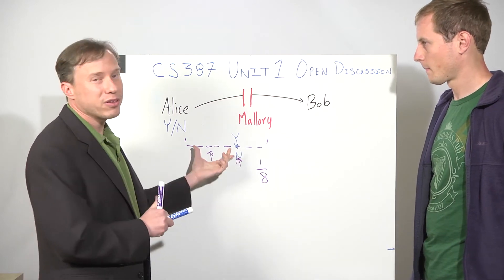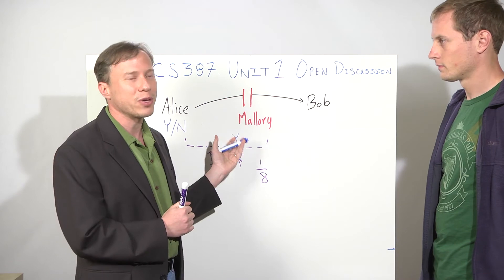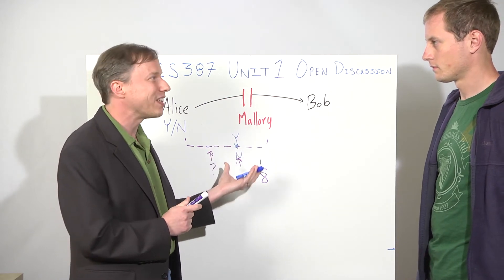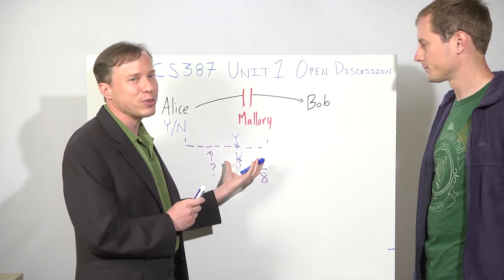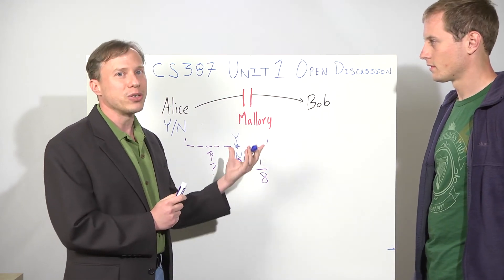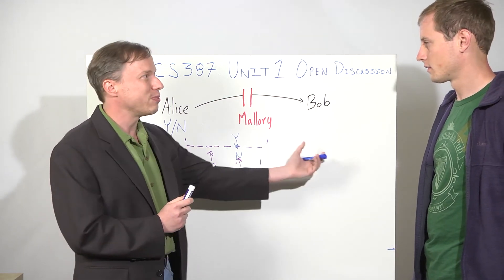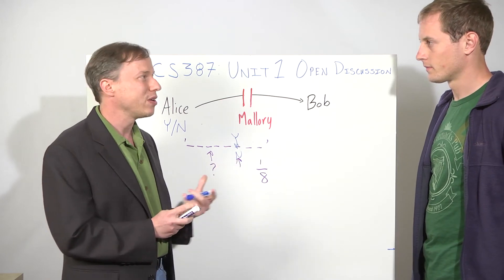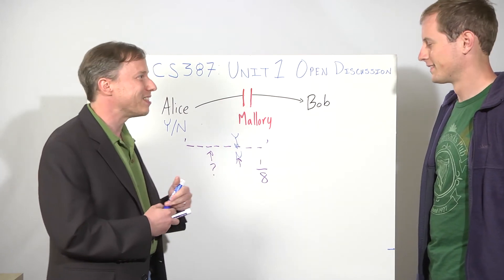So this is pretty good. This has a nice property. It means if we make a message long enough, we can make Mallory's success probability as low as we want. But we need a really long message. If we want her success to be less than 1 in 256, we need a string that's 256 bytes long, which is less elegant.